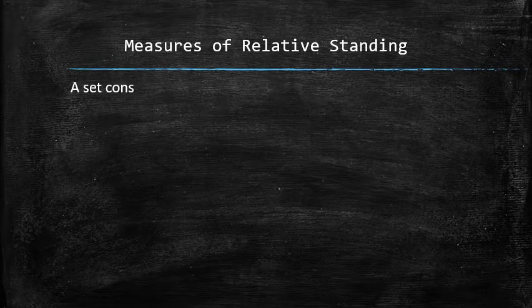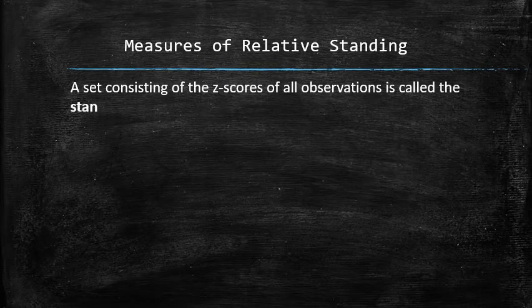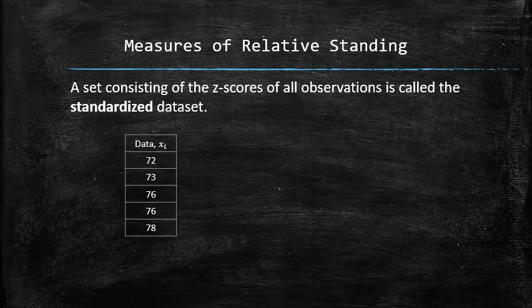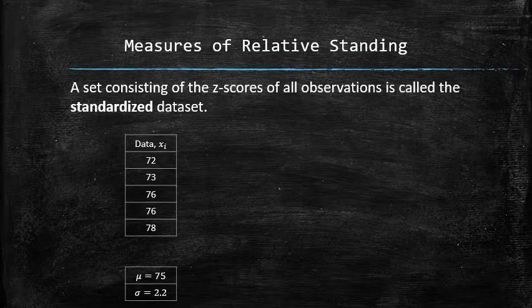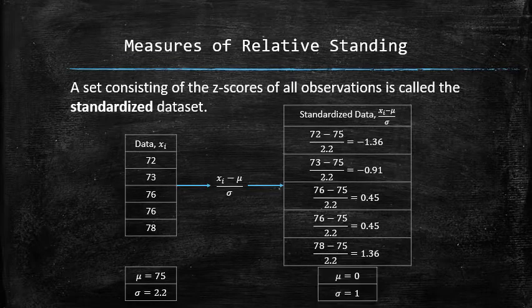A set consisting of the z-scores of all observations is called the standardized data set. For example, consider the following population, which has the mean 75 and the standard deviation 2.2. By replacing each value with its z-score, we obtain a new set called the standardized set. Note that in the standardized set, the mean is always zero and the standard deviation is always one.